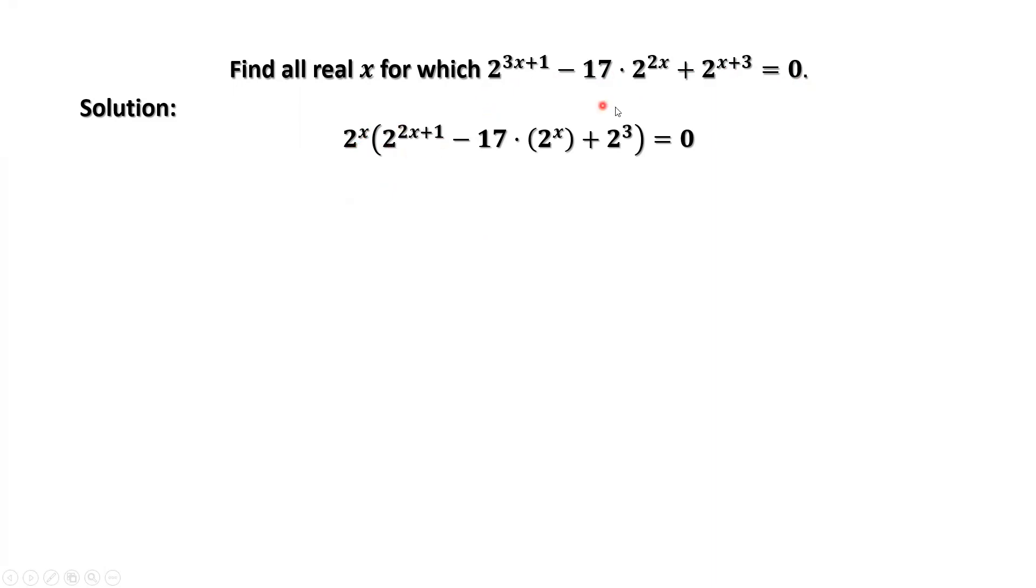Rewrite the inside part of the second factor. Then we have 2 to the power of x times 2 times 2 to the power of x, then square, minus 17 times 2 to the power of x plus 8. Here, 2x plus 1. Here, 2 times x, that's 2x. 2 to the power of 1, that's 1. 1 plus 2x, that's 2x plus 1. 2 to the power of 3 equals 8.